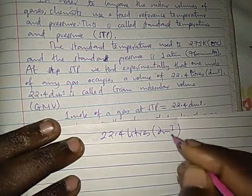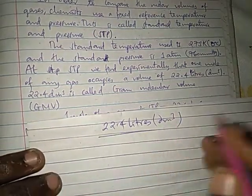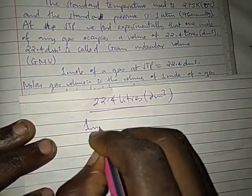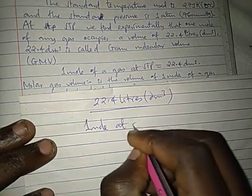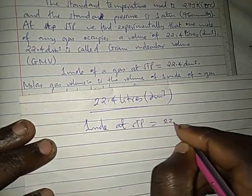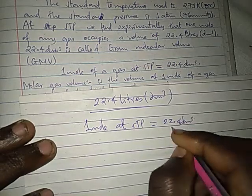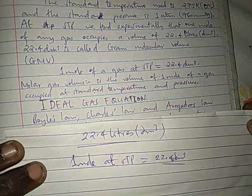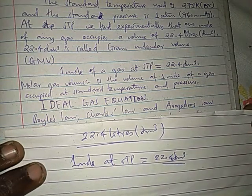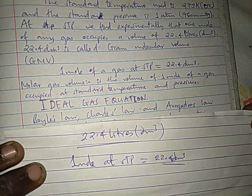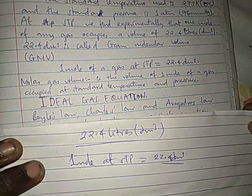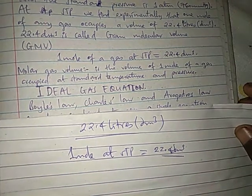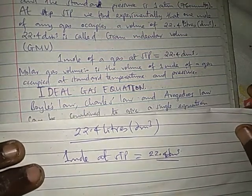At STP, it is found experimentally that one mole of any gas occupies a volume equal to 22.4 liters or dm³. This 22.4 dm³ is named as the GMV — molar gas volume. So one mole at STP has a volume of 22.4 dm³. The molar gas volume is the volume of one mole of a gas occupied at standard temperature and pressure.